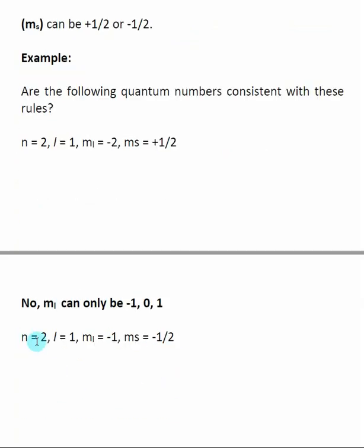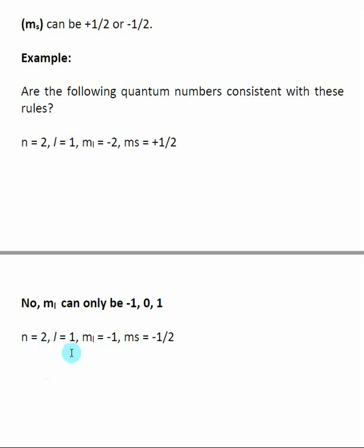Here's another set of quantum numbers. Once again, I start at the left. n is equal to two — n can be any non-zero integer, so that's fine. L is equal to one. The possible L values start at zero and go up to n minus one, which is one, so the possible L values are zero or one. L equal to one makes sense and follows the rules.